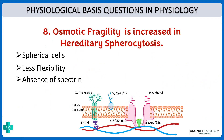In hereditary spherocytosis there is absence of spectrin, so the cell becomes more spherical rather than the normal biconcave shape, and it has less flexibility — that is why the cells tend to become very fragile. Osmotic fragility is increased because the altered shape due to absent spectrin gives these cells less flexibility.